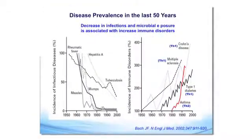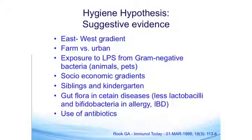This is a very nice review from Jean-François Bach, showing that our decreased infections and microbial exposure is associated with almost a mirror image of both TH1 and TH2 exaggerated responses: Crohn's disease, multiple sclerosis, diabetes, asthma — almost a mirror image of what we have done through this modulation, what is known today as the hygiene hypothesis. All of these factors — from rural changes to the number of siblings to the use of antibiotics — suggest that our relationship with microbes has been disrupted.